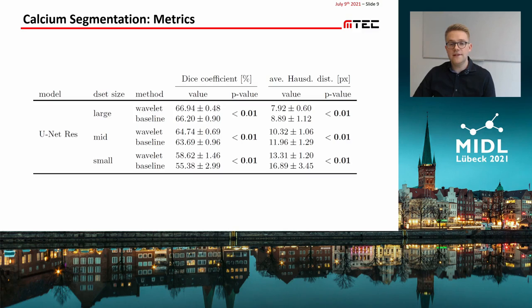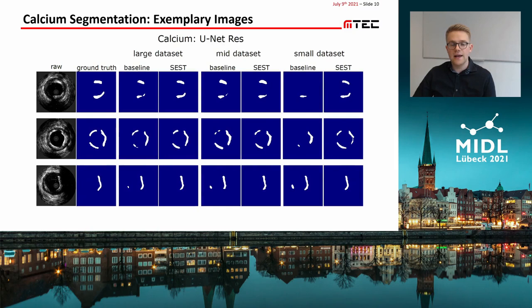For brevity, I'll only show the results of ResU-Net. With a few exceptions, the results of DeepLab version 3 are quite similar and can be found in the paper. For calcium segmentation, we see that the scattering transformation approach always outperforms the baseline with a statistically significant margin. However, improvements are larger for smaller datasets, as we also assumed — up to 6% relatively for the DICE and 21% for the average Hausdorff distance.